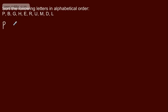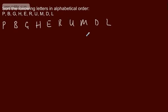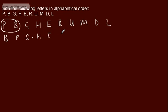Let's do the comparison by comparison method. Our list: P, B, G, H, E, R, U, M, D, and L. Again, if you say you know what order they're going in and just write it out, you'll get no marks. First comparison: P with B. B comes before P, so I rewrite the list. I'm keeping these nicely in order.